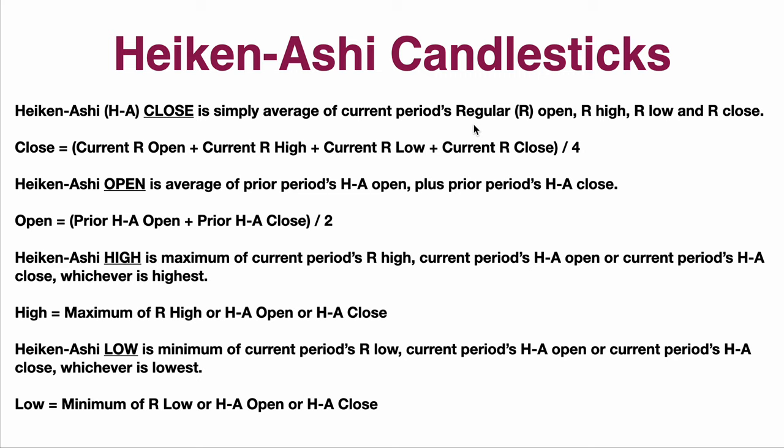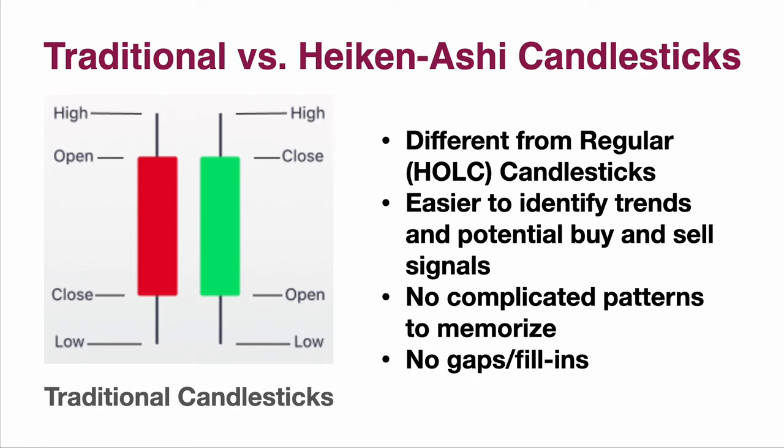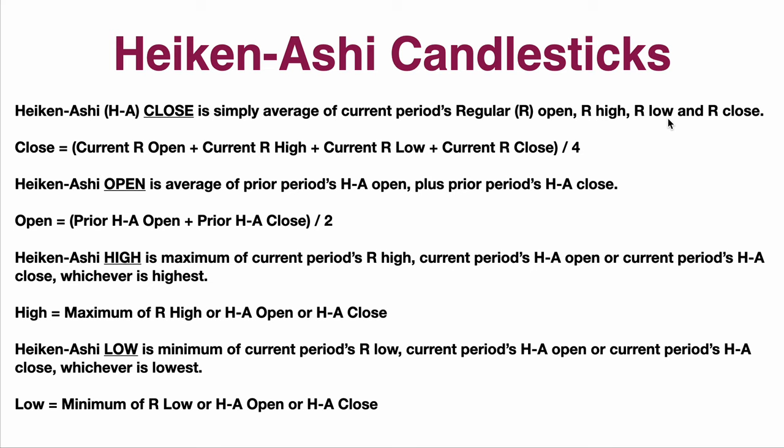That is, if you're using a two-day chart, then you're using to calculate the close the open, the high, the low, and the close — just the regular prices that you see on a traditional candlestick. You're using those numbers, whether it's a down or an up candlestick, to calculate this. You simply average that: take the current open, the current high, the current low, the current close, add those numbers together, and divide by four.